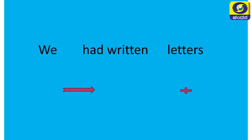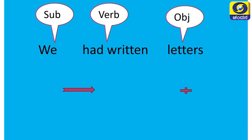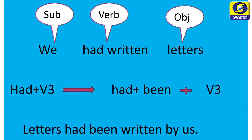Past perfect tense: 'We had written letters.' Subject is 'we,' verb is 'had written,' letters is the object. In passive voice, had + verb 3 changes to had + been + verb 3. Passive: 'Letters had been written by us.' These are the changes we should follow.